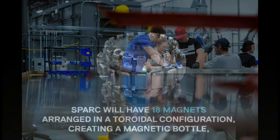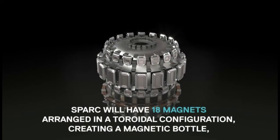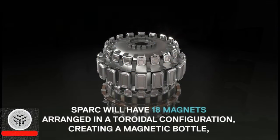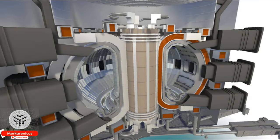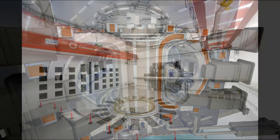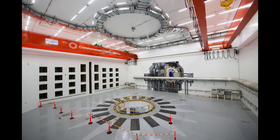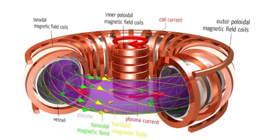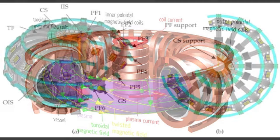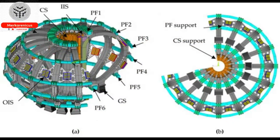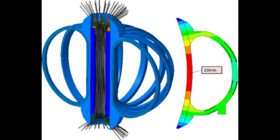One particularly groundbreaking innovation, met with skepticism by many in the field, involved removing the insulation around the thin, flat ribbons of superconducting tape that formed the magnet. Unlike conventional superconducting magnets, which are fully insulated to prevent short circuits, the new design left the tape completely exposed. The engineers relied on the exceptional conductivity of REBCO to ensure uninterrupted current flow through the material.